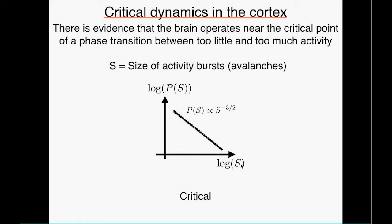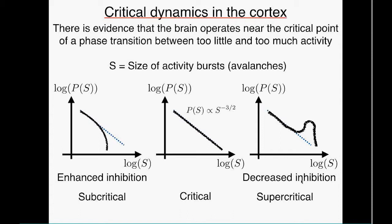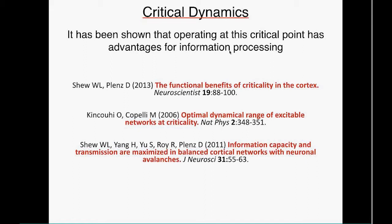When no drugs are given, the distribution of avalanche sizes follows a power law with exponent minus three over two, corresponding to a critical branching process — meaning activity propagates from one time step to the next without being amplified or damped on average. When a drug enhancing inhibition is given, the distribution changes dramatically and is no longer a power law; similarly for a drug decreasing inhibition. This suggests the brain operates at this critical point, which has been shown to optimize various features of information processing.